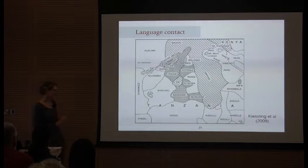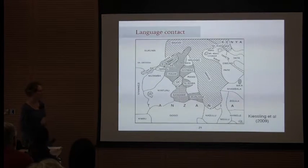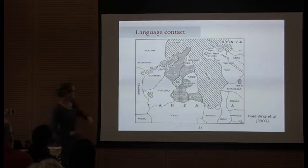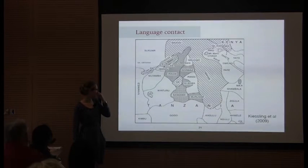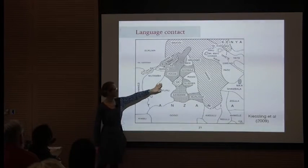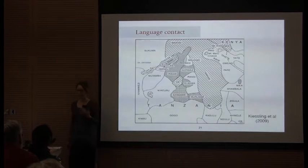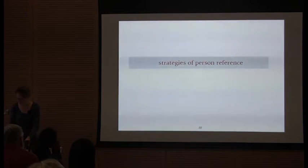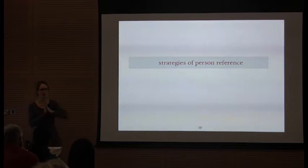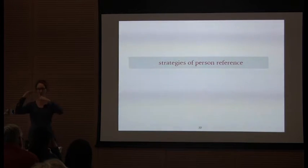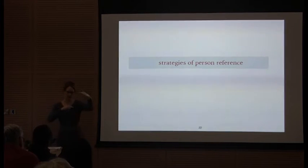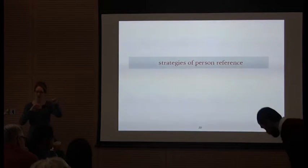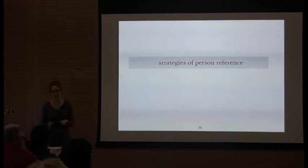In terms of language contact, it's actually surprisingly easy to find monolingual Datoga speakers — quite unusually for Africa, there are many monolinguals. The most likely second language would be Iraqw, a Cushitic language, or Swahili if the person has been to school. Moving on now to strategies of person reference in Datoga, I'm going to start by looking at the most circumspect or the most indirect ways of referring — starting with pronouns, then descriptions, then kinship terms, and finally names and name avoidance.